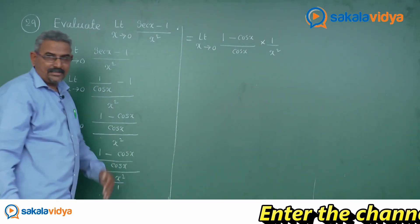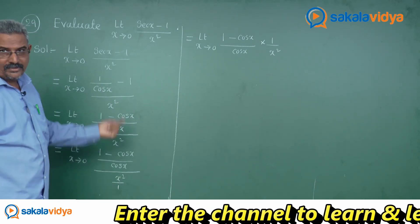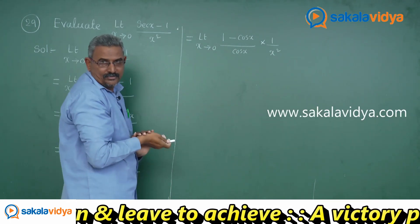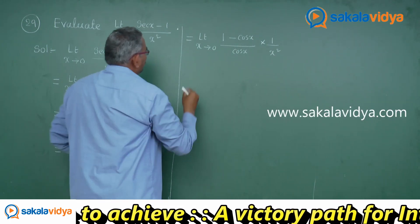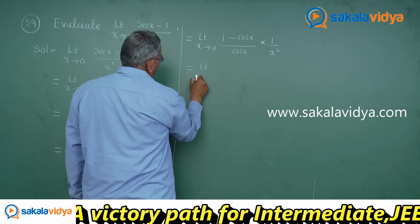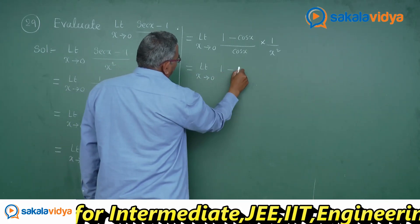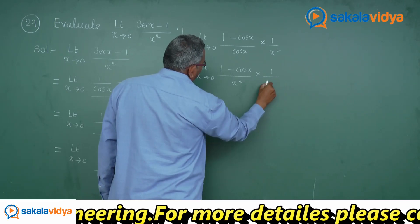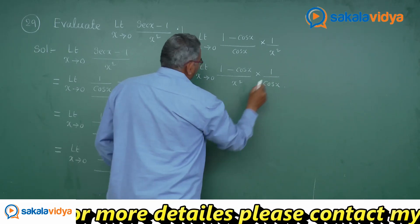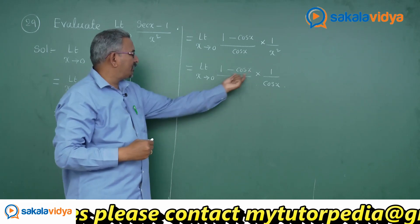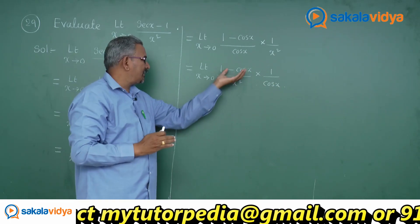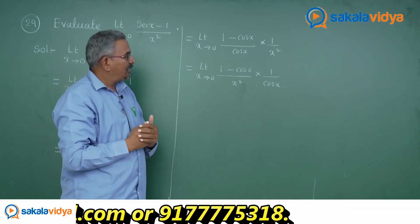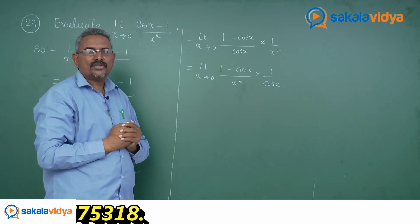So 1 minus cos x by cos x, multiplied by reciprocal of x square by 1, is 1 by x square. Now we can interchange these two terms — it makes no difference. This can be rewritten as limit x tends to 0: 1 minus cos x by x square, into 1 by cos x. This is the product of two functions: the first is 1 minus cos x by x square, and the second is 1 by cos x. The limit can be applied to both functions simultaneously.